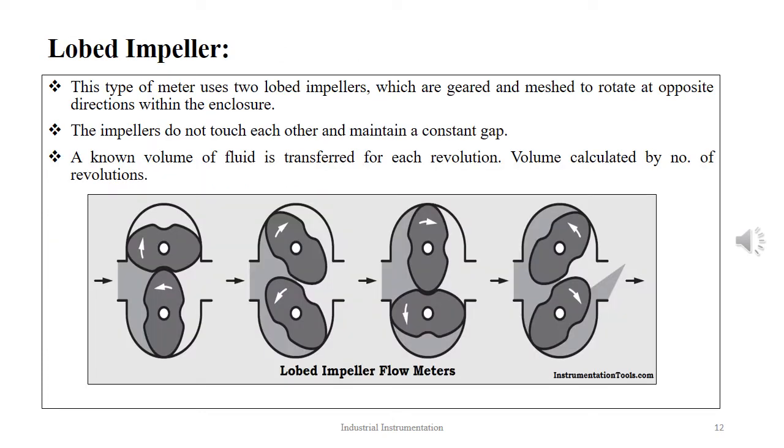The next type of positive displacement flow meter is the lobed impeller. This type of meter uses two lobed impellers which are geared and meshed to rotate at opposite directions within the enclosure. Two rotating impellers with cross-sections rotate in opposite directions due to the gas flowing through and the force being exerted by that. The impellers are shaped such that the gap between them remains constant without getting touched. A gear arrangement assures the synchronous movement of the impellers using adjustable fine-tuned gear train arrangement.